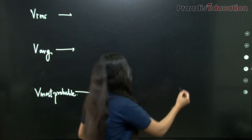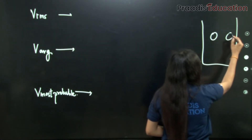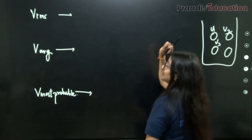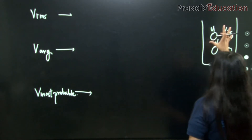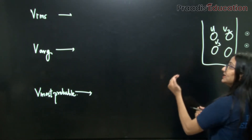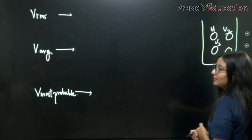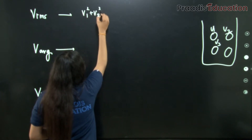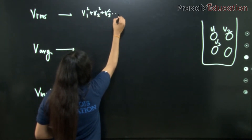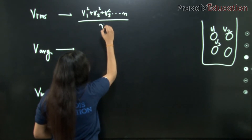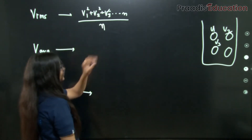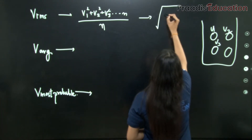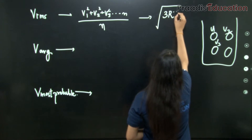For v_rms — root mean square speed — we take the speeds v1, v2, v3 of the molecules, square them, take the mean (i.e., divide by n), and then take the square root. Mathematically: v_rms = √[(v1² + v2² + v3² + ... + vn²) / n]. After derivation, the formula comes out as v_rms = √(3RT/M).